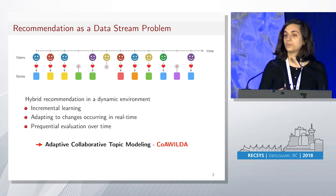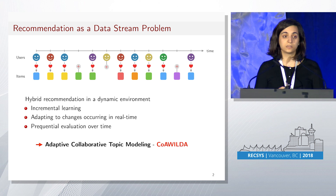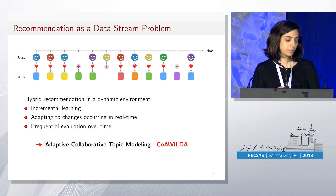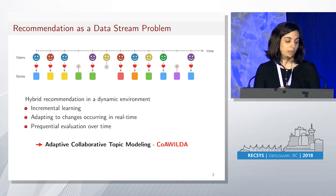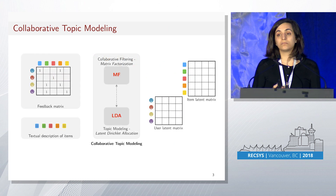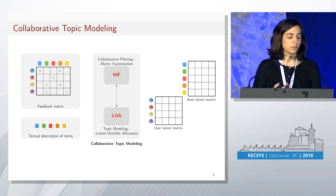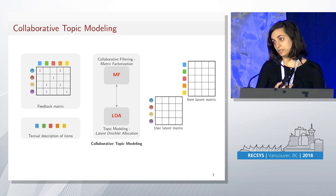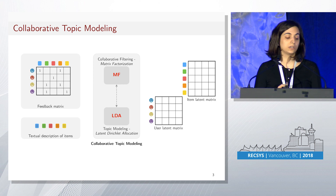In this work, we show the interest of using drift detection techniques in the recommendation problem. We propose our approach, which is called COA-WILDA, for adaptive collaborative topic modeling. Our approach is based on the known framework for recommendation — collaborative topic modeling — which is a hybrid approach based on matrix factorization for the collaborative filtering part and on LDA for the topic modeling part.